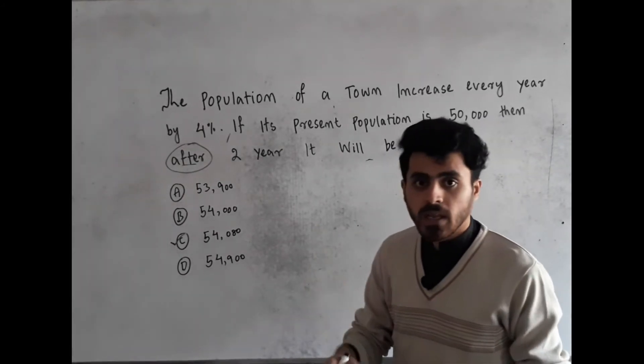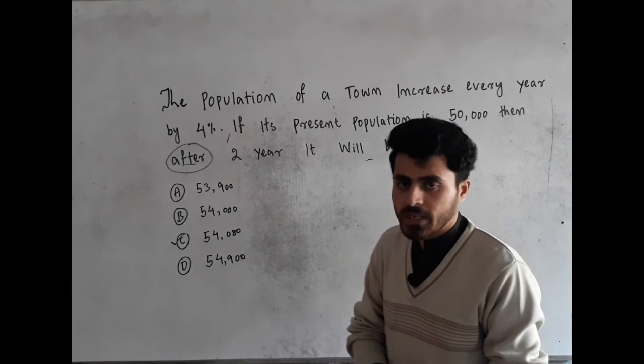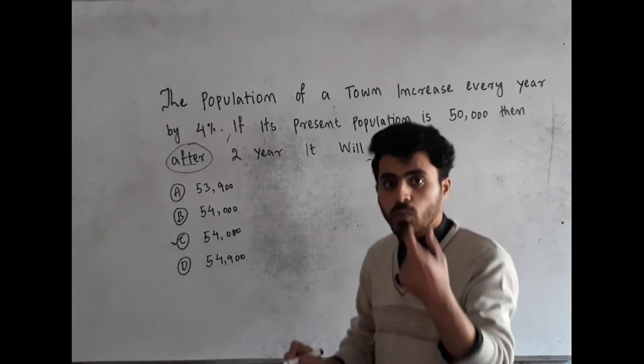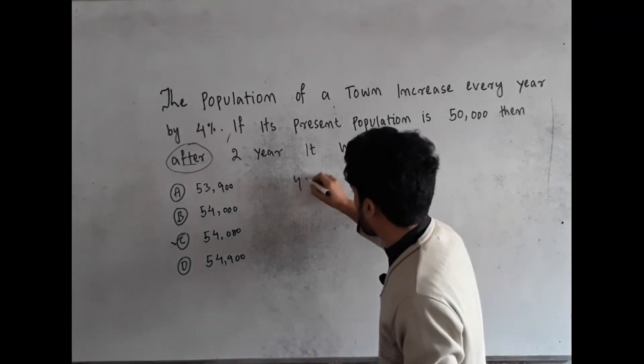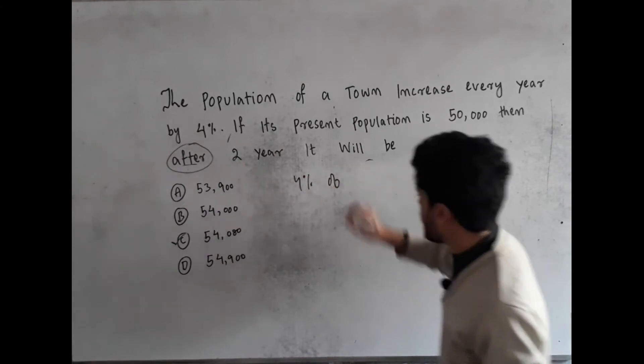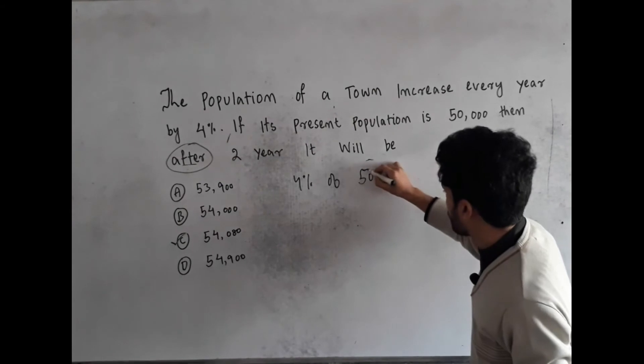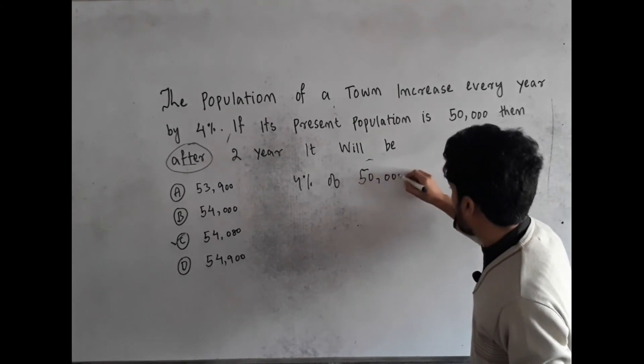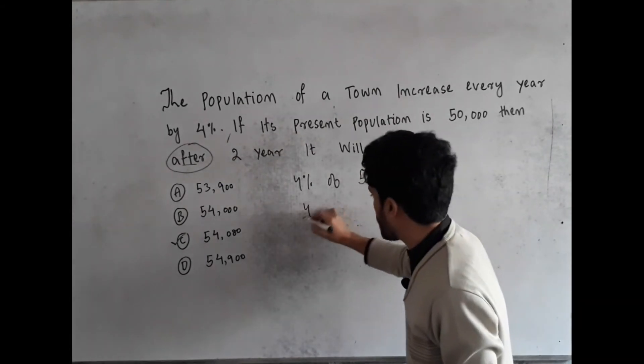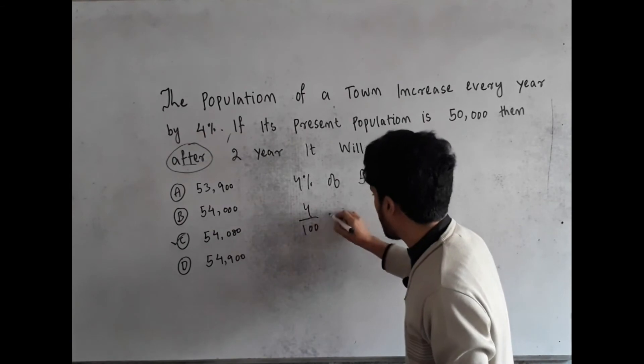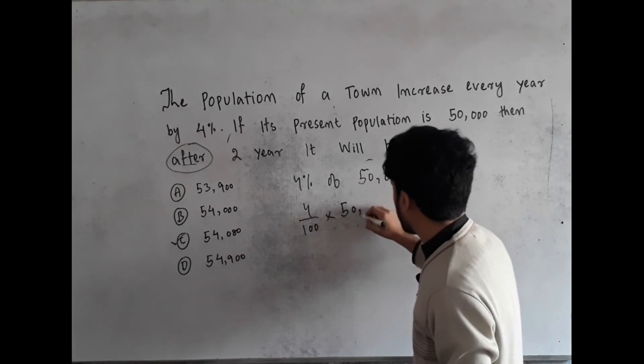In the first year, the population increases 4 percentage. So it means that another question appears like what is 4 percentage of 50,000? You have to find 4 percentage which is 4 divided by 100 multiplied by 50,000.